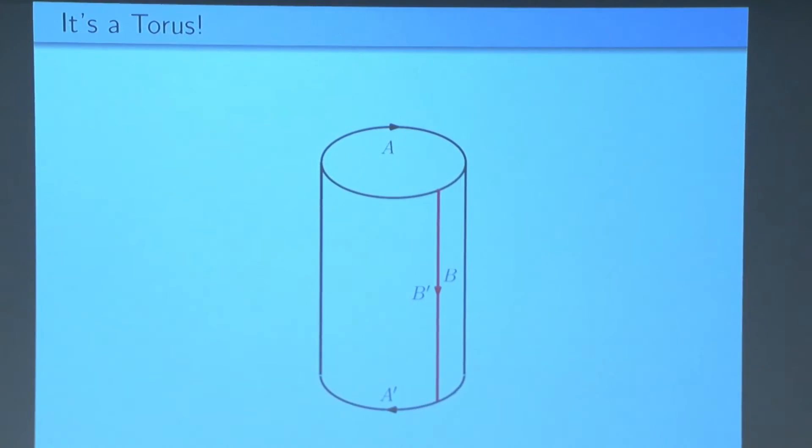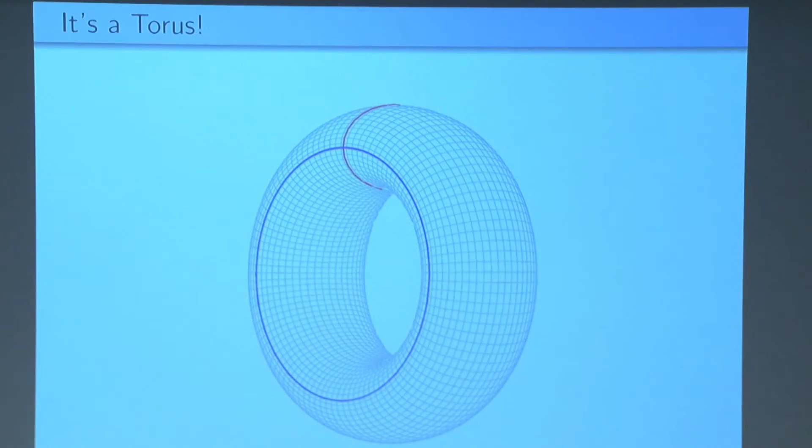And we can do the same thing for the top and bottom boundaries. A and a prime, the arrows are pointing in the same direction, and we can glue them together to get a torus as we expected. The red circle there is the boundary between a and a prime, the blue circle is the boundary between b and b prime.